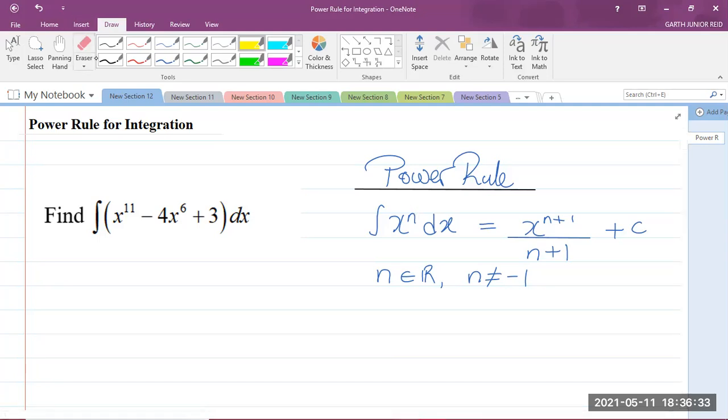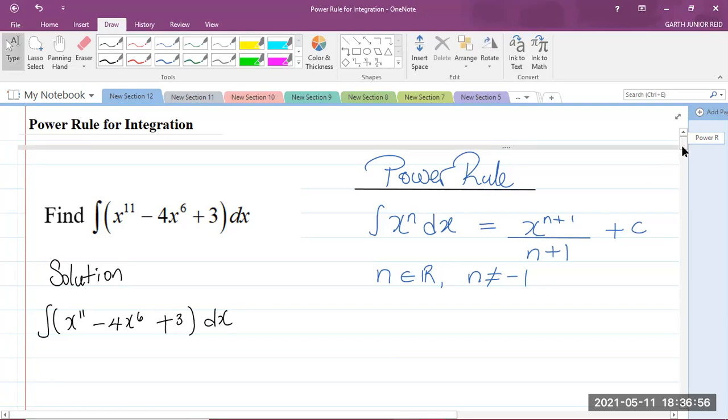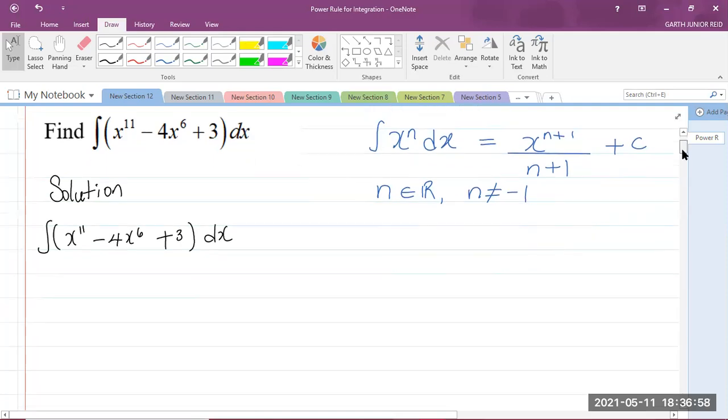So, let us apply this formula now. Let me write solution here. What we have is the integral of x to the power of 11 minus 4x to the power of 6 plus 3 with respect to x. Let me just scroll down a bit.